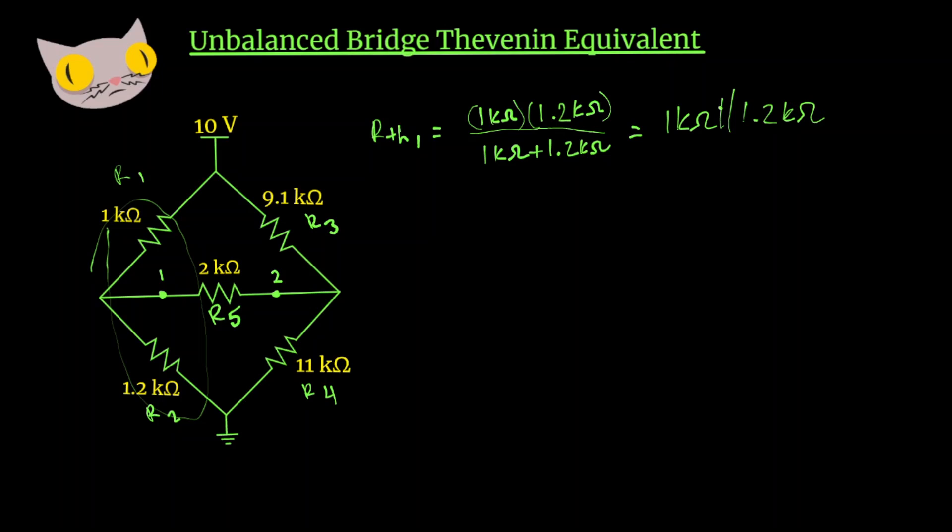That basically means divide the product by the sum. And we get 0.545k ohms. That's our Thevenin resistance for that part.